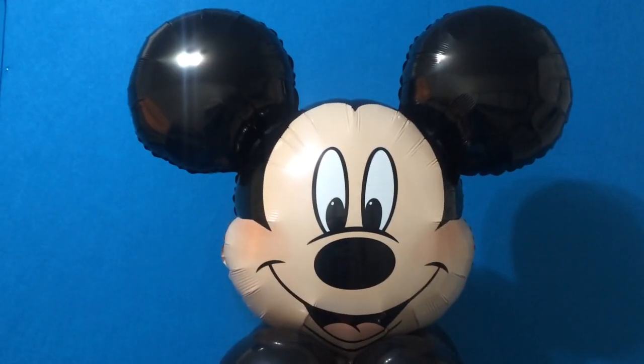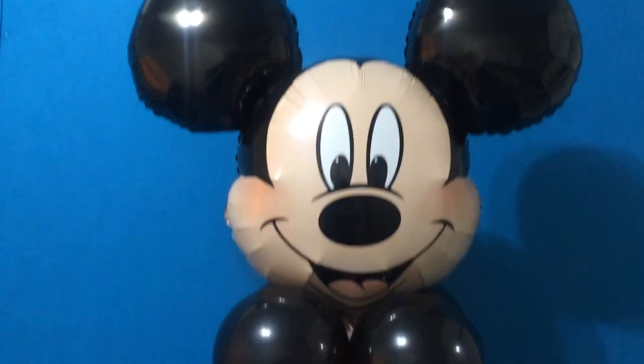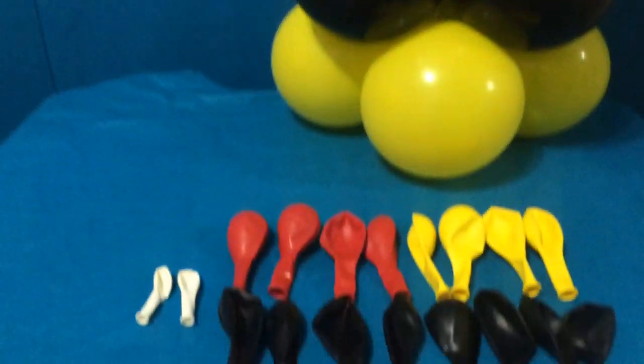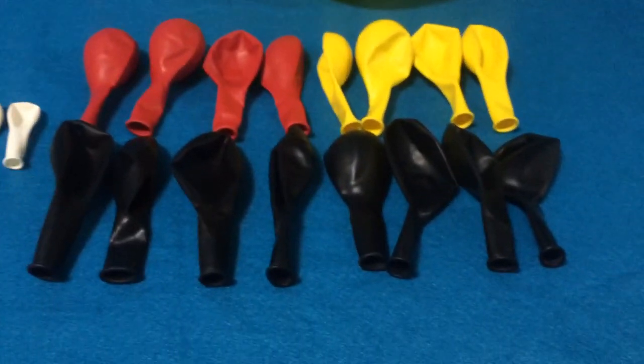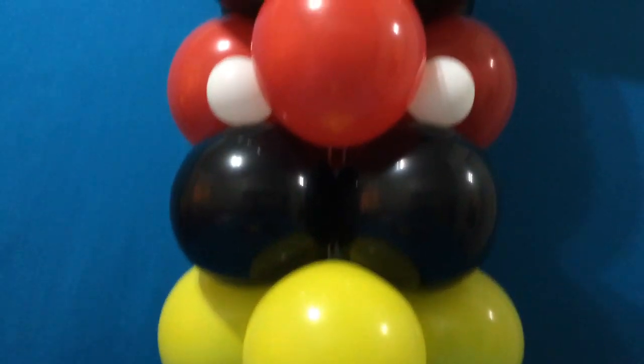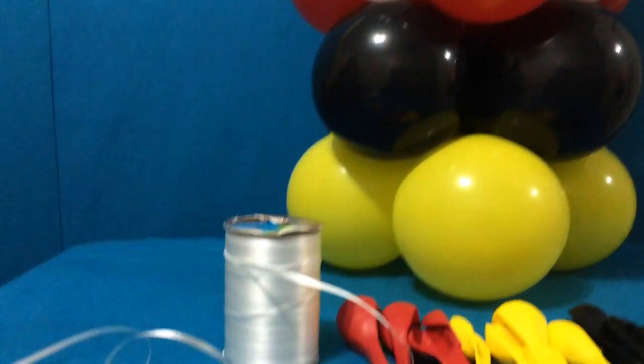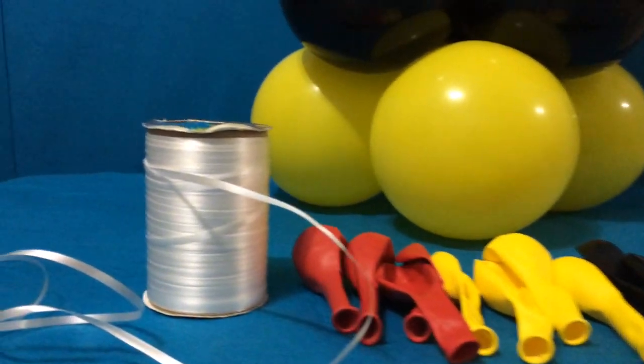This popular Mickey Mouse Head Mylar Balloon crowns a short column of 16 11-inch round latex balloons: 4 red, 4 yellow, and 8 black for shoes, legs, trousers, and body. The buttons are a pair of 5-inch rounds, and the construction process is a breeze.